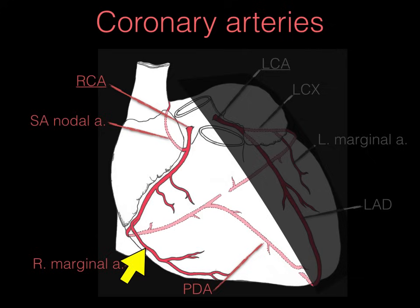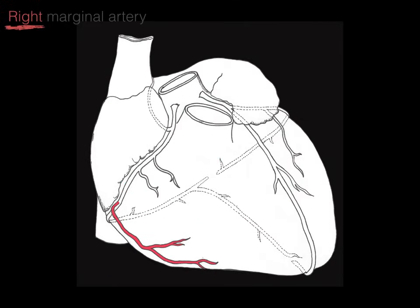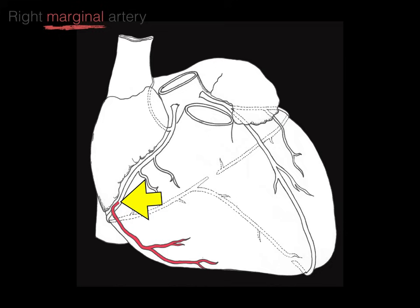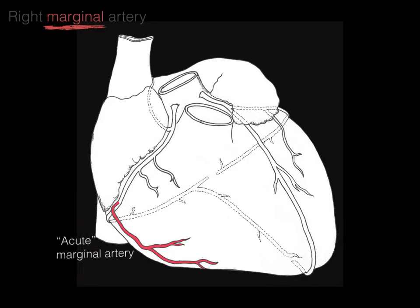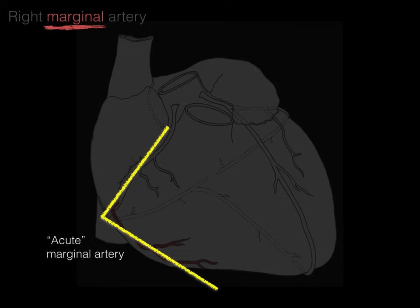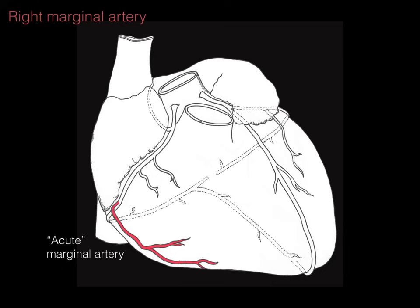The right marginal artery gets its name because it comes from the right coronary artery and courses along the right margin of the heart. It's also called the acute marginal artery because the angle between the coronary sulcus and that border of the heart forms an acute angle, which is less than 90 degrees. Hence, right marginal artery and acute marginal artery are synonymous.